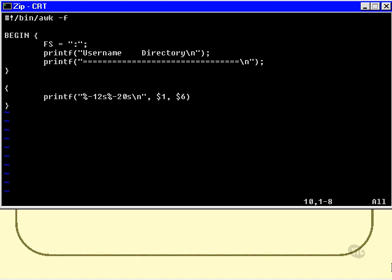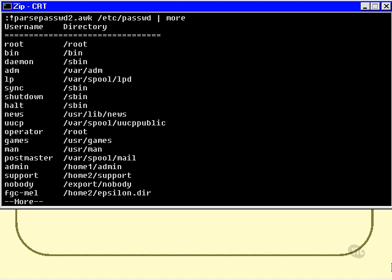We'll run this script and we'll feed it one parameter which is etc password and we better pipe the results to more so we can see the heading. And there you go, username and directory and it's all nicely formatted as you can see. That's the way you achieve that sort of output using AWK.